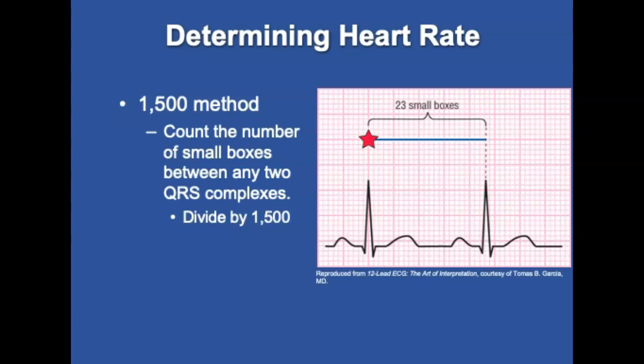The 1500 method is the most accurate, typically used for a heart rate that exceeds 150, and can only be used on regular rhythms. Count the number of small boxes between two QRS complexes — specifically the R-on-R interval — then divide by 1500. For example, if you have 23 small boxes, divide by 1500 and you get a heart rate of 153.